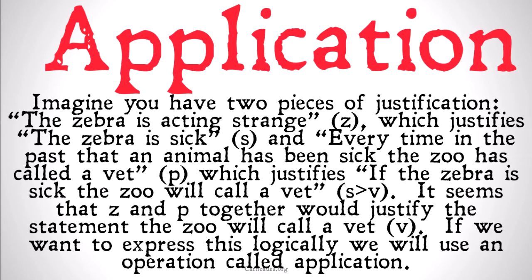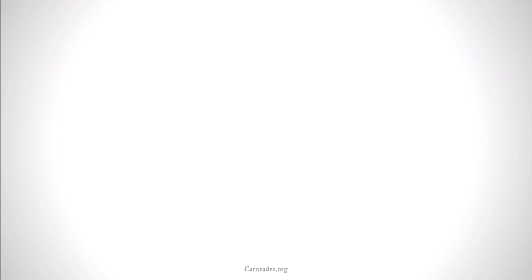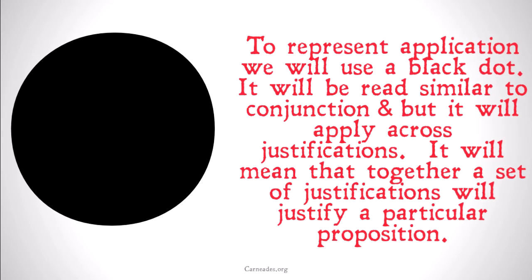Using modus ponens, we should be able to say that they will justify the consequent of the conditional. If we want to express this logically, we're going to use an operation called application. To represent application, we'll use a black dot. It reads similar to conjunction, which we represent with an ampersand, but it applies across justifications — meaning that together, a set of justifications will justify a particular proposition.